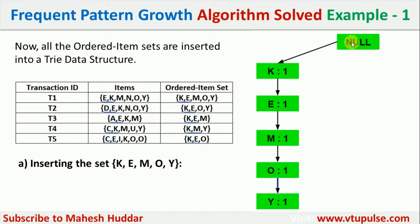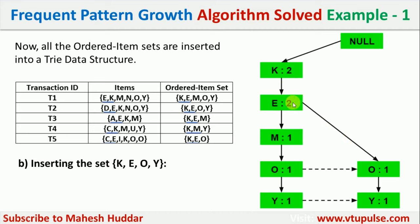The FP-tree is built starting with a null node. For every transaction's ordered item set, we create a path. For transaction 1 (K, E, M, O, Y), we create nodes with frequency 1 each. For transaction 2 (K, E, O, Y), K and E are already present so their frequencies increment to 2; O and Y are added as new nodes with frequency 1. This gives the path K(2), E(2), O(1), Y(1) as a branch alongside the existing M(1), O(1), Y(1) nodes.